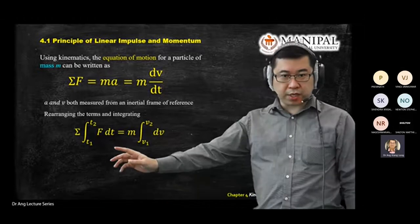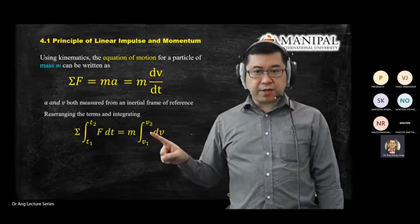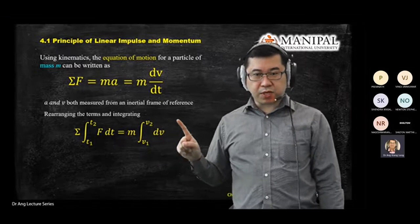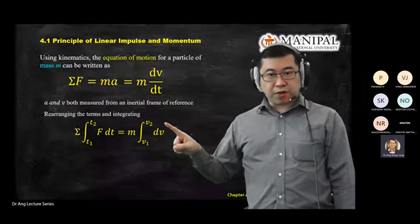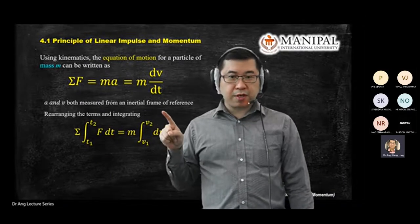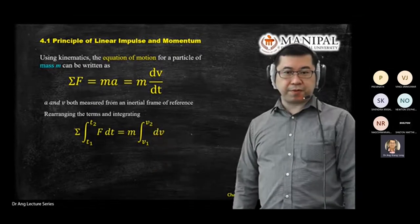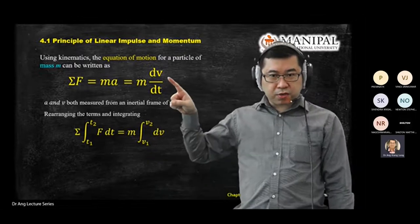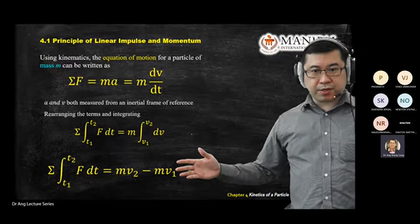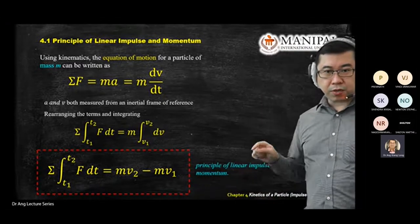On the right-hand side, you have m times the integral of dv. Since the coefficient of dv is the constant one, integrating gives m times (v2 minus v1). Normally v1 is given and you need to find v2, although sometimes the reverse is true. This transformed equation is the key result for Chapter 4.